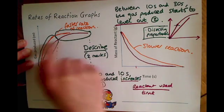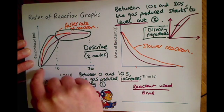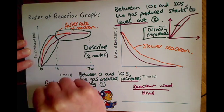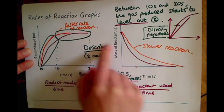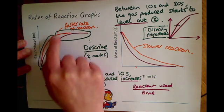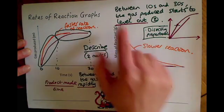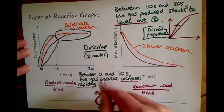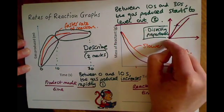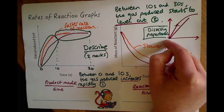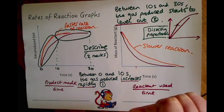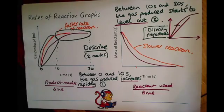In summary, for rates of reaction graphs you need to be able to interpret them, perhaps draw a line representing a slower or faster reaction, and describe the graphs by separating them into sections and describing each to get your two marks. One key thing to look out for: if you see a straight line relationship that goes through zero, write about directly proportional. If you find my videos useful please press the like button and subscribe to Revision Monkey — thanks very much for listening and I'll see you in the next video.